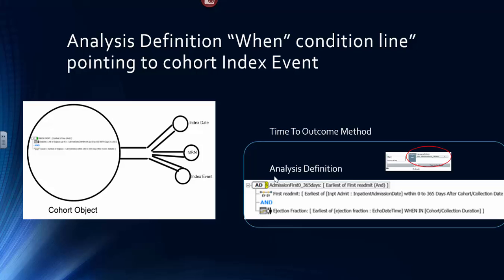And I actually display it here. And you can see the first line, the first readmission, is pointing to the index date because it's asking for a first readmission, zero to 365 days after the cohort collection date.